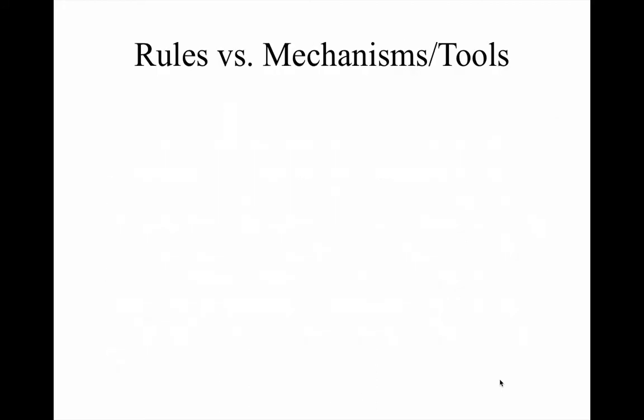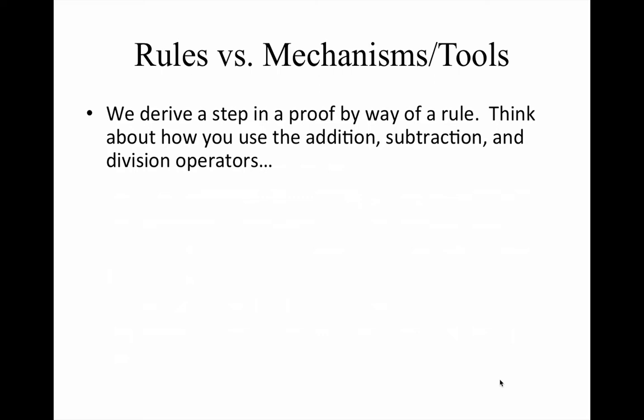Now, ANACON is a mechanism in Fitch that serves as a stopgap for a justificatory rule until we get to the rules that we will use in derivations. At present, if you're in chapter two, you have the identity rules, but no other way to justify an inference. So since we derive a step in a proof by way of a rule, we're going to need to have some actual name of a justification.